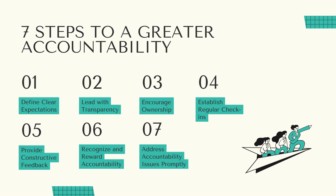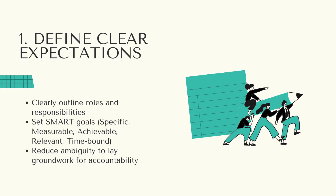There are seven steps to greater accountability and I will be diving deeper into each of them today. Firstly, define clear roles and expectations. The foundation of accountability is clarity. As senior leaders, we must clearly define roles, responsibilities and expectations for each team and their ownership area. This includes setting specific, measurable, achievable, relevant and time-bound goals, known as SMART goals.